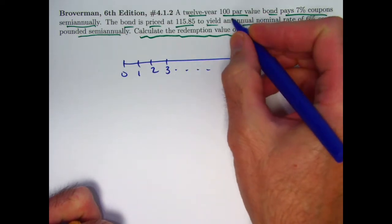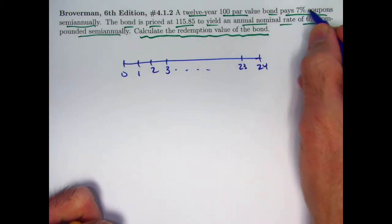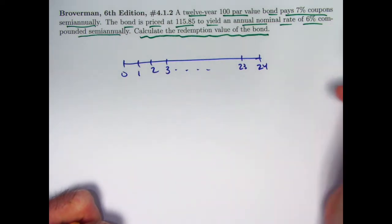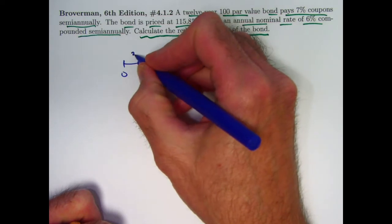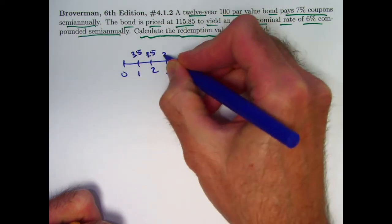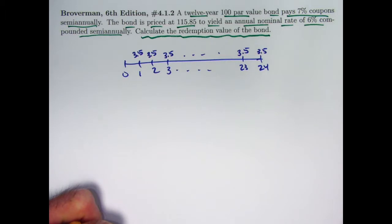The coupons, again, are the par value, the face value, $100 here, times the coupon rate as a semi-annual rate. You have to take the 7% and divide it by 2 to get 3.5%. So the coupons are $3.5, 100 times 3.5%. 24 coupons of $3.5.